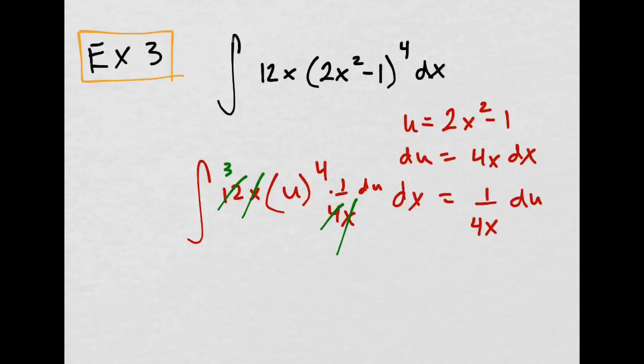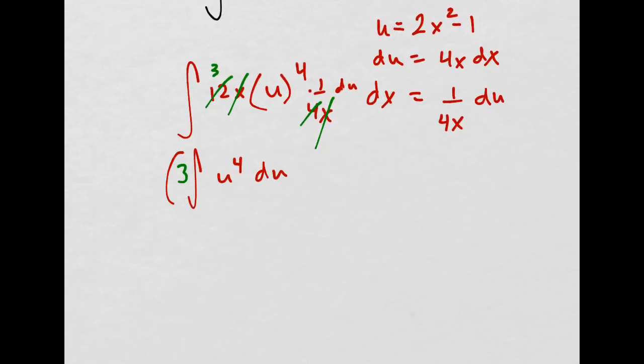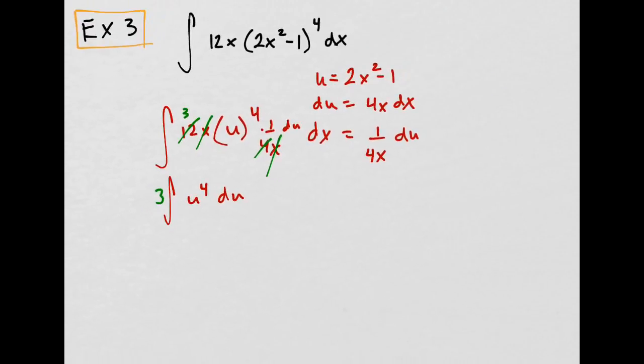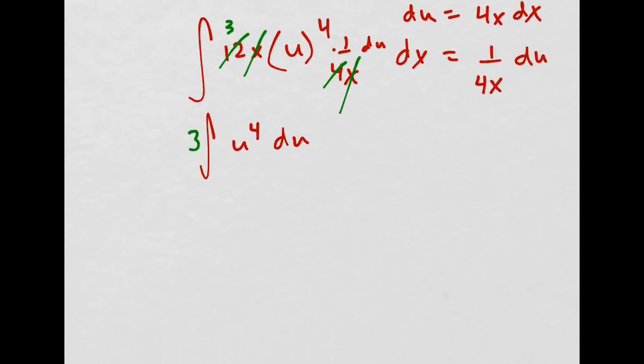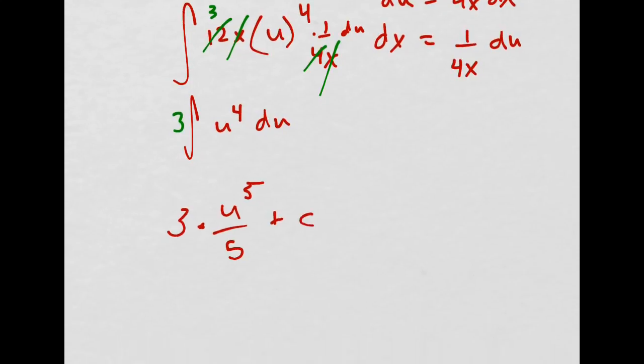12 divided by 4 is 3. So then we have that, and I'm going to move the 3 out in front of the integral. And then I just have u to the fourth du. Everything else canceled, except for that 3. That's the only thing that's different in this problem. Now I have a 3 outside. It doesn't matter. u to the fifth over 5 times the 3 plus c.